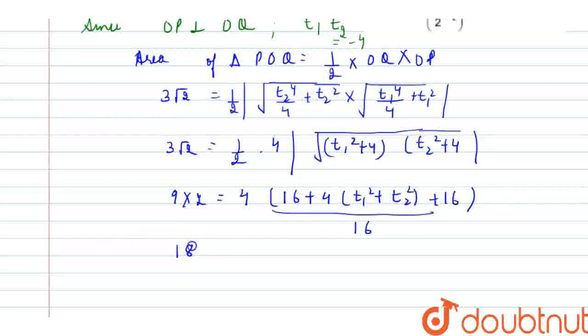Solving it further, that is, 18 is equal to 8 plus, I am basically simplifying it, so 8 plus t1 square plus t2 square. Solving it further, I get t1 square plus t2 square minus 10 is equal to 0.